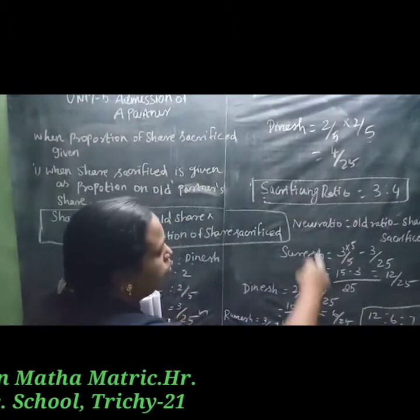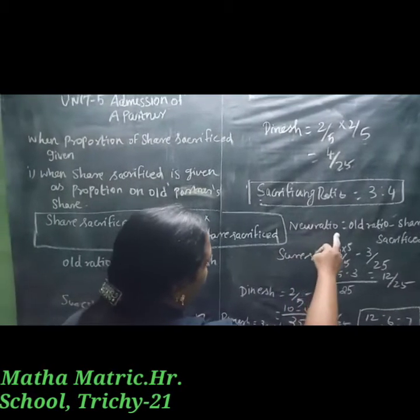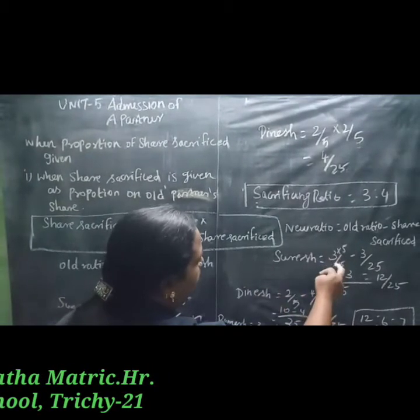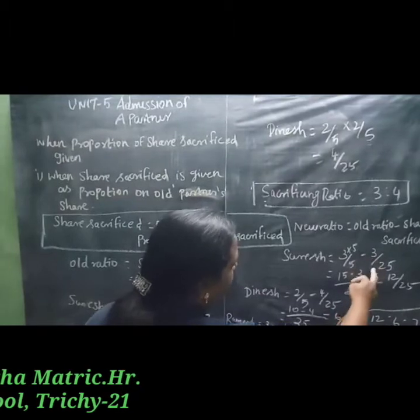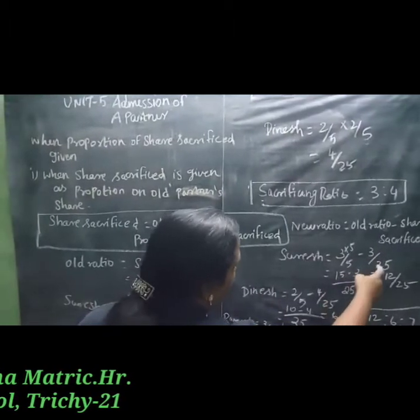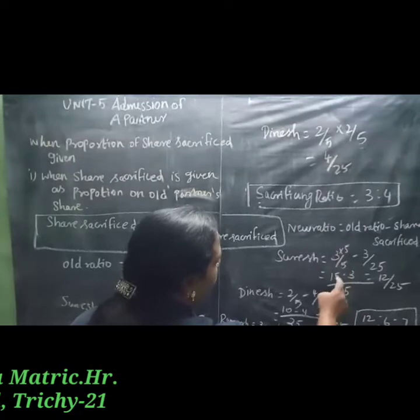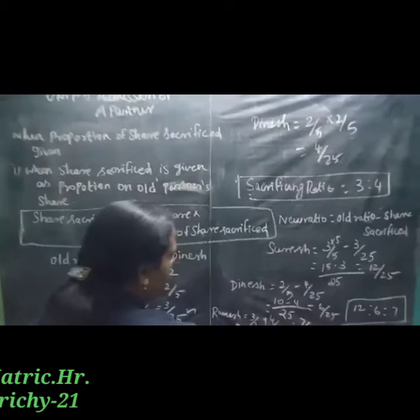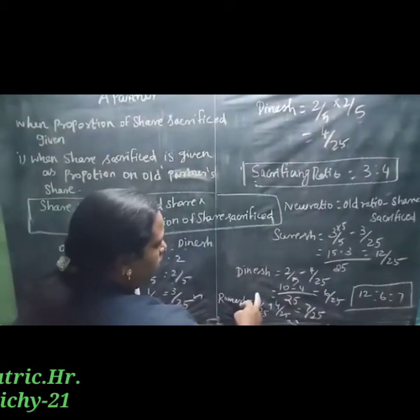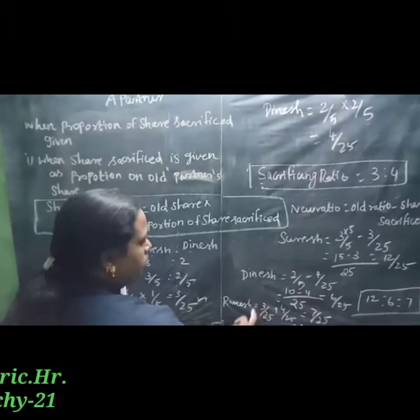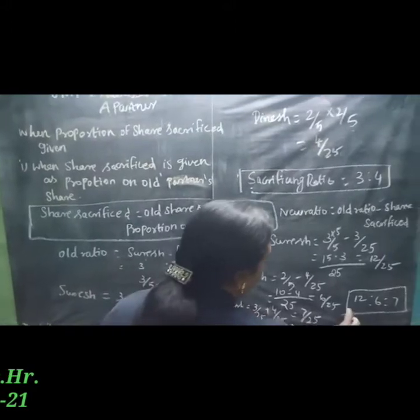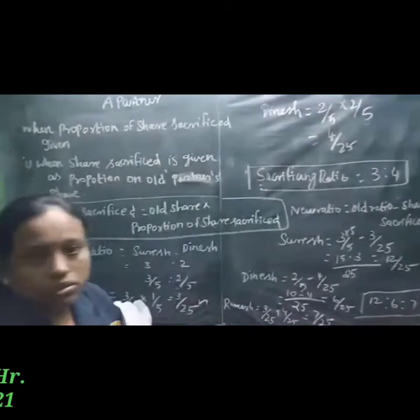New ratio formula: new ratio equals old ratio minus share sacrifice. For Suresh: 3/5 minus 3/25, LCM is 25, so 15/25 minus 3/25 equals 12/25. For Dinesh: 6/25. For Ramesh: Suresh sacrifice 3/25 plus Dinesh sacrifice 4/25 equals 7/25. New ratio equals 12 : 6 : 7.